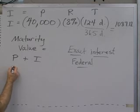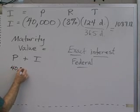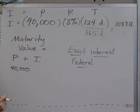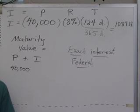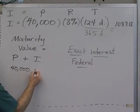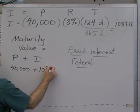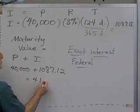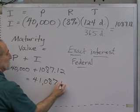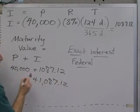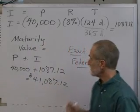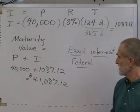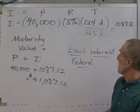In other words, if they ask for the maturity value, they're saying, how much does Peg have to pay back at the end of the time, on the 124th day of the loan? She has to pay back the principal plus the interest, and that is equal to the maturity value that the bank expects her to pay back when the loan is due.